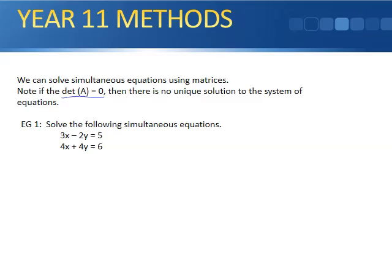So example 1 here says solve the following simultaneous equations: 3x minus 2y equals 5 and 4x plus 4y equals 6.